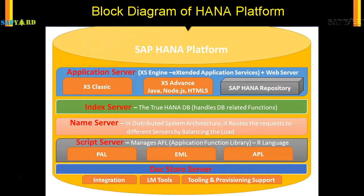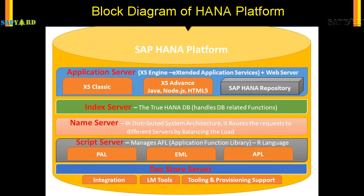Then comes the Doc Store Server, which stores document files. The Doc Store represents a third type of data store in HANA. So if someone asks how many stores there are in HANA, the answer is three: the Row Store, the Column Store — which is the most popular in HANA — and the Doc Store.